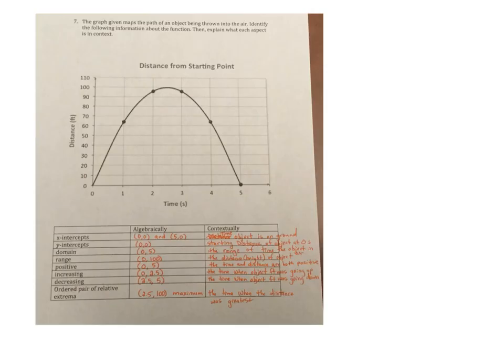All right. Number seven, the graph given maps the path of an object being thrown into the air. Identify the following information about the function. Then explain what each aspect is in context. So here's my graph. All right. So they asked me for the X intercepts. X intercepts are right down here. So it is at zero, zero and five, zero. Then they say contextually, which means what does that mean? Well, that means the time the object is on the ground. Okay. Y intercept. There's only the one right here. It's at zero, zero as well. Contextually, the starting distance of the object at zero seconds.